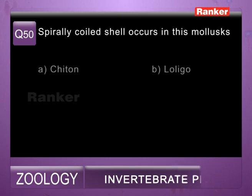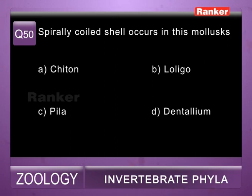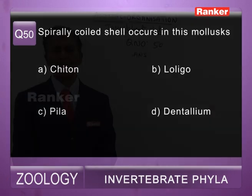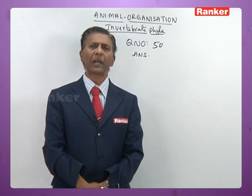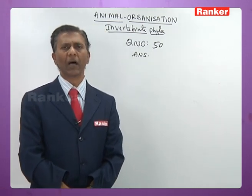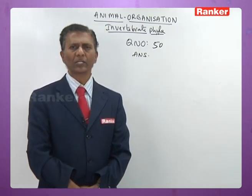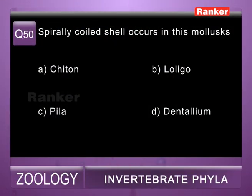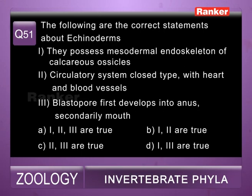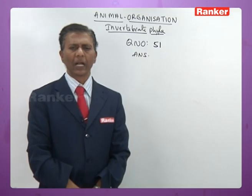Question fifty: spirally coiled shell occurs in which molluscs — a) Chiton, b) Loligo, c) Pila, d) Dentalium. In Pila, which belongs to Gastropoda, shell is spirally coiled with six to six-and-a-half coils called whorls. So fiftieth question correct answer is c.